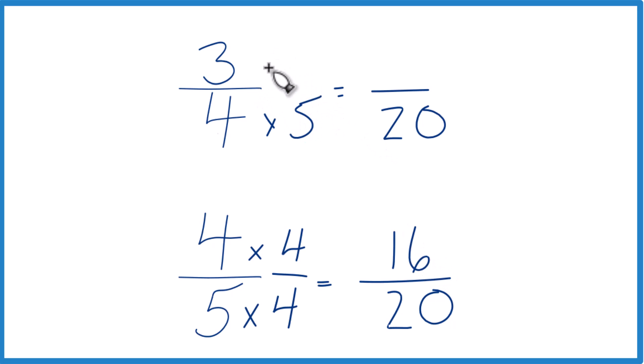Up here, we need to multiply by 5. 3 times 5 is 15. Now, same denominator. Compare the numerators.